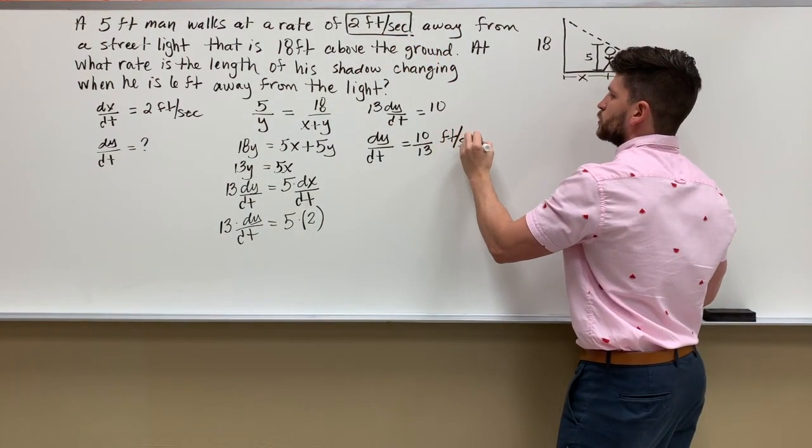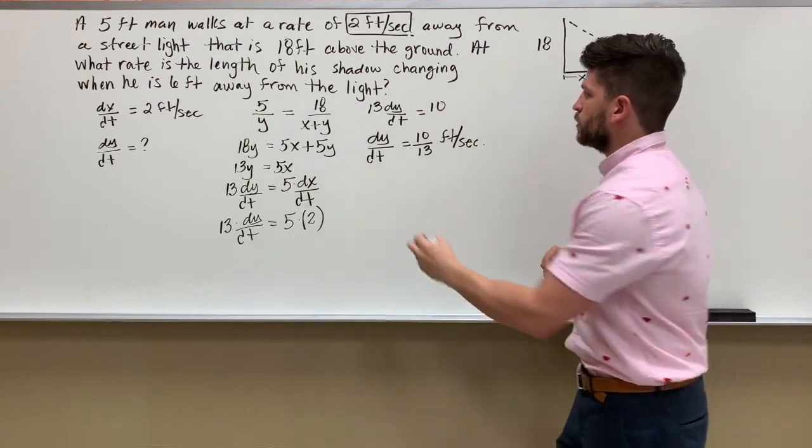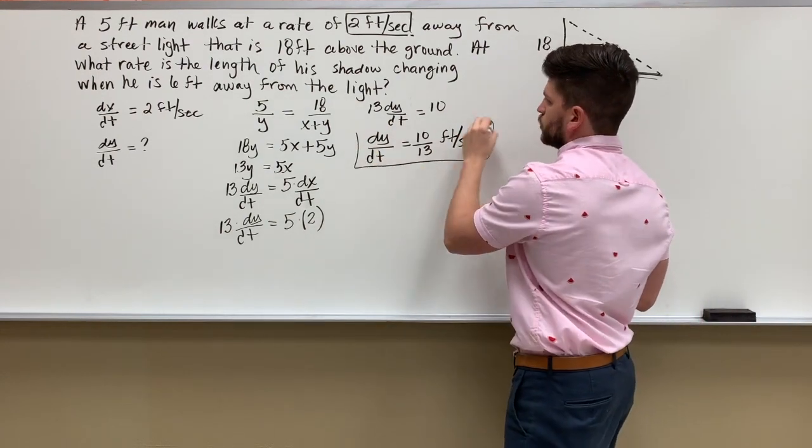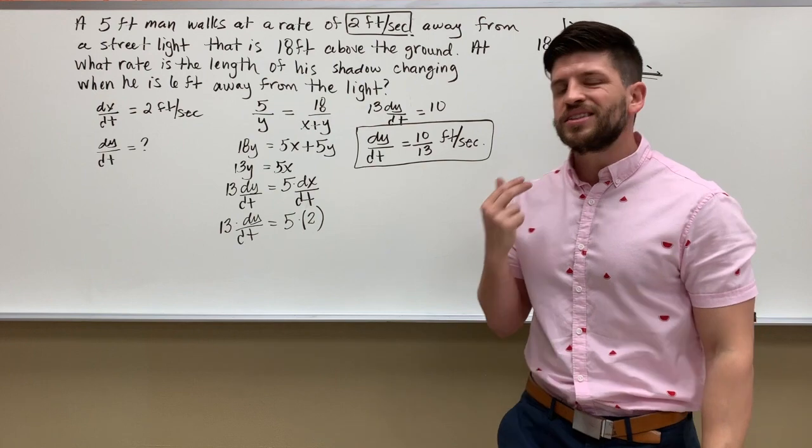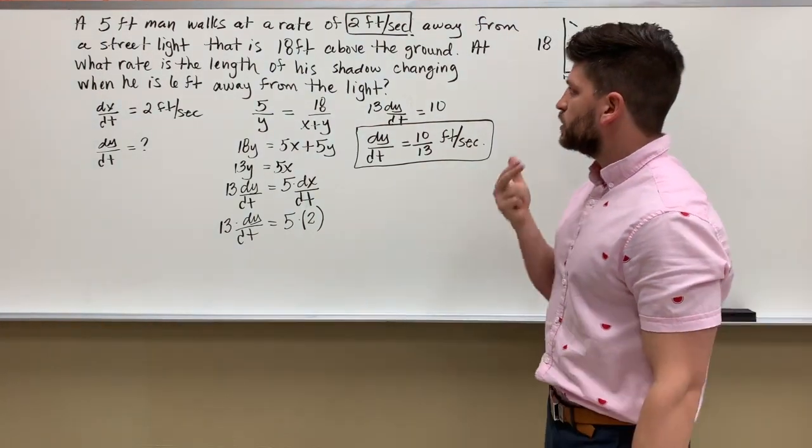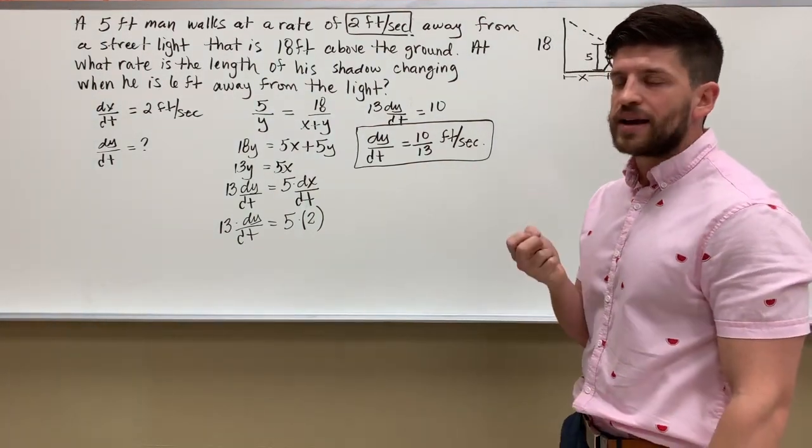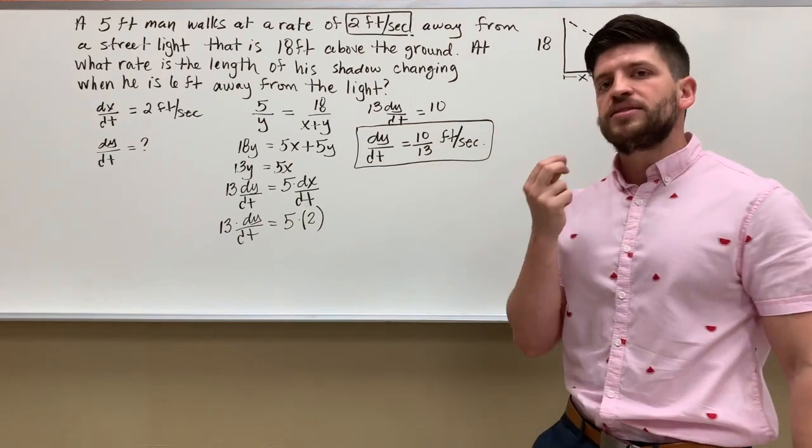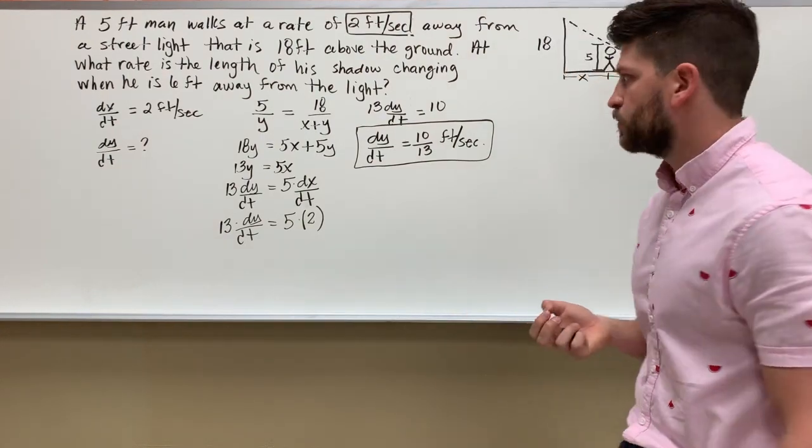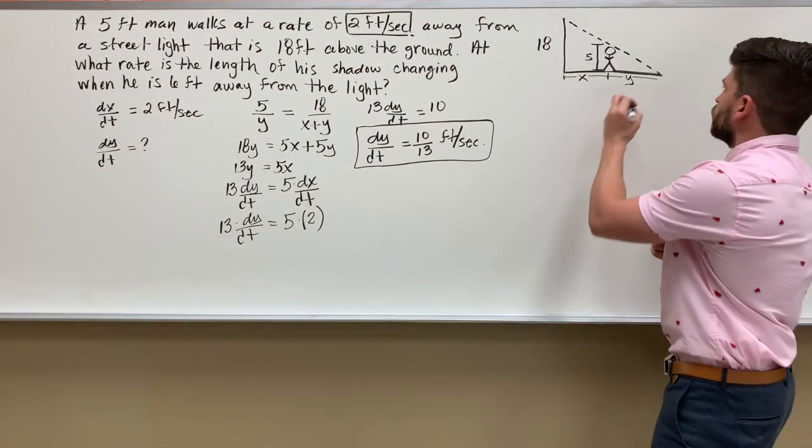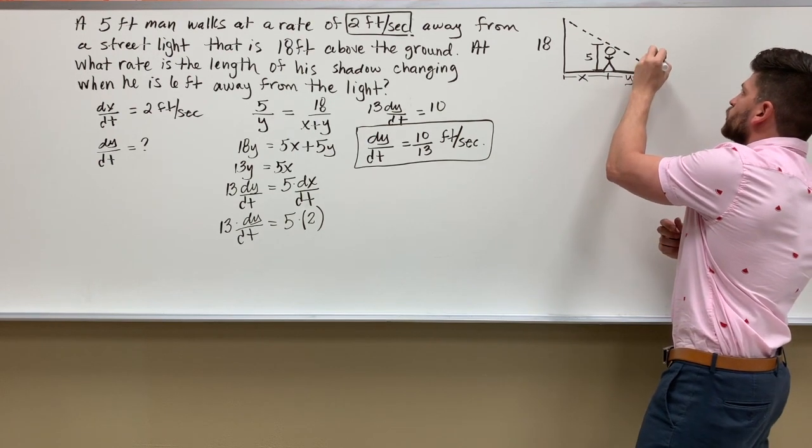Now this wasn't part of the problem, but sometimes they'll ask you an additional question. Sometimes they'll ask you at what rate is the tip of his shadow changing. The tip of his shadow is this part right here in the triangle.